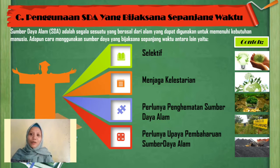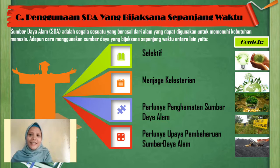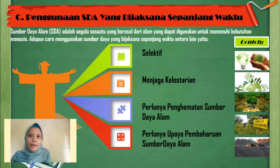Fourth, we need to carry out renewal of biological natural resources — for example, reforestation, preserving flora and fauna in modern ways, rotating field planting, and so on. Concrete examples of wise natural resource use include: saving scarce natural resources (such as coal and others, which are non-renewable), and preserving natural resources so they can be passed down to future generations.